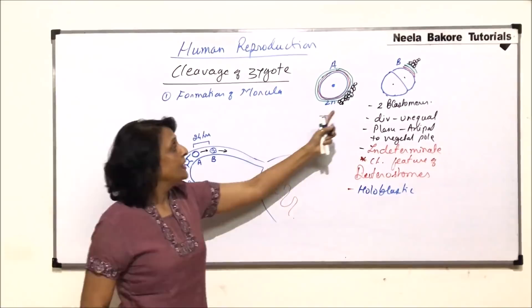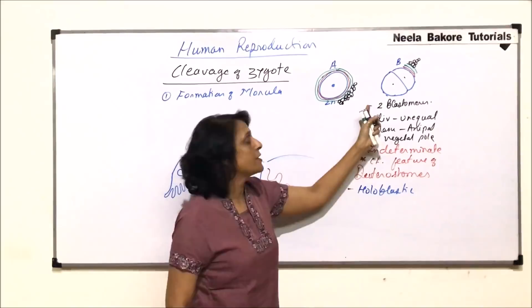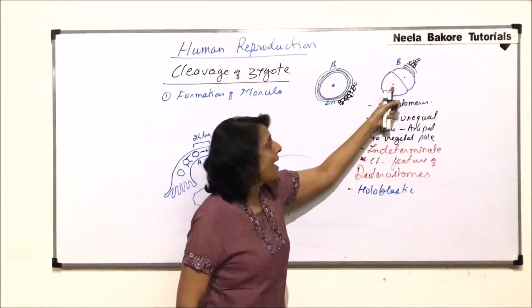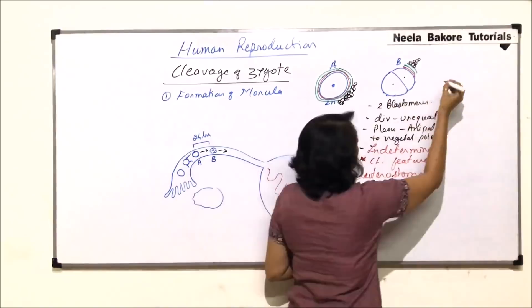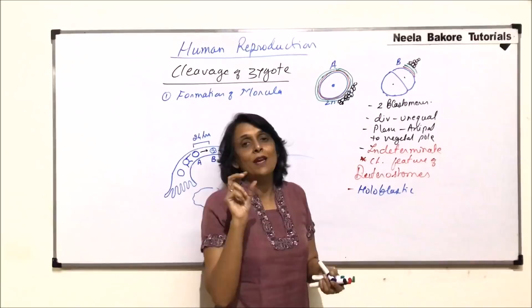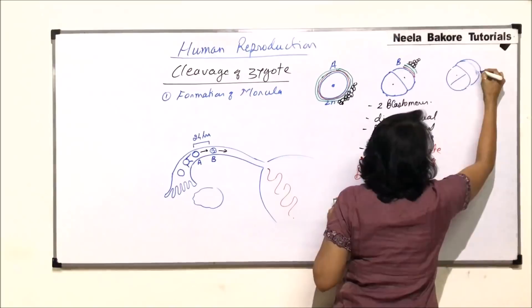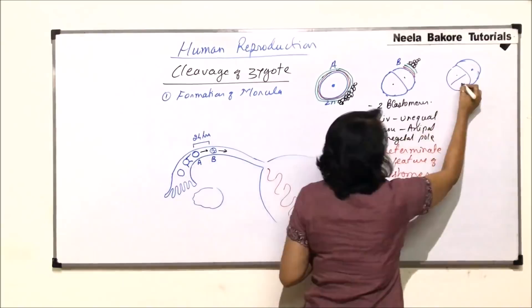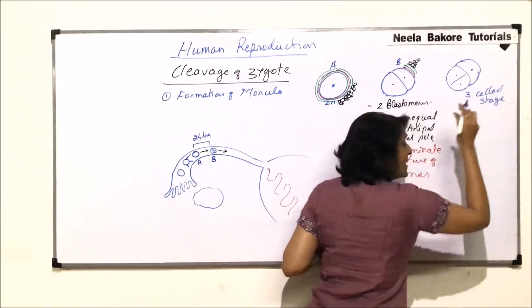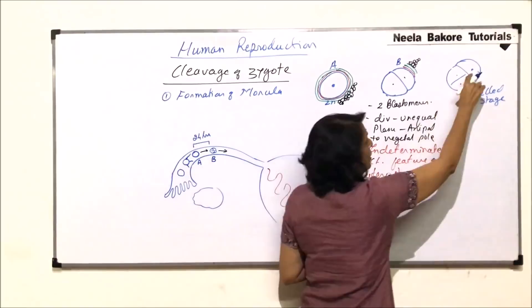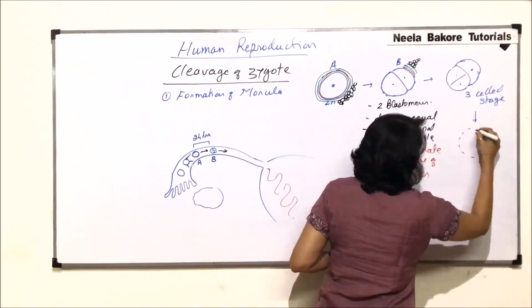In the next stage, we may see a three-cell stage. These two cells are going to divide again. The first division was through the animal-vegetal pole; the second division is going to be at right angles to the first one. But the larger cell will divide first and then the smaller cell. If the larger cell divides first, we would see a short-lived three-cell stage.